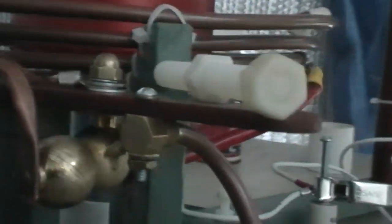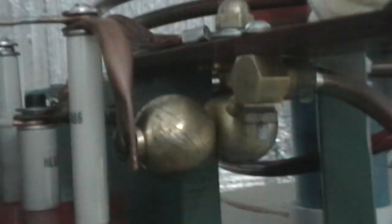This is the adjusting setup to adjust the gap, tapped at about two and a third turns there. The microwave oven transformer is powered by the wall through this variac here.